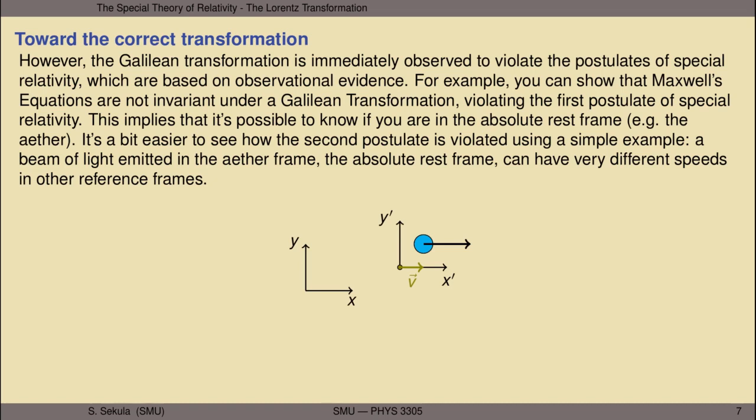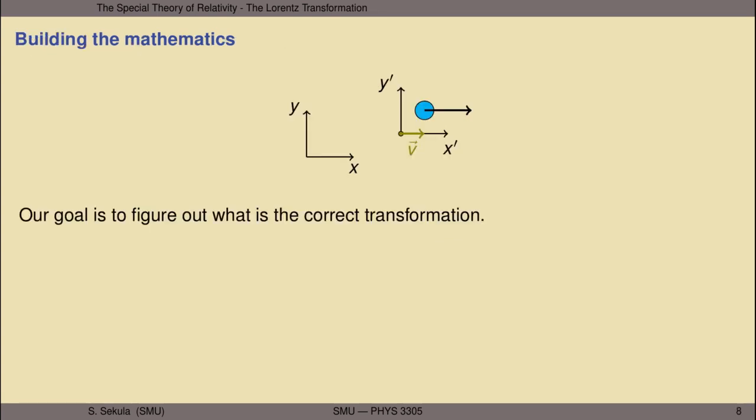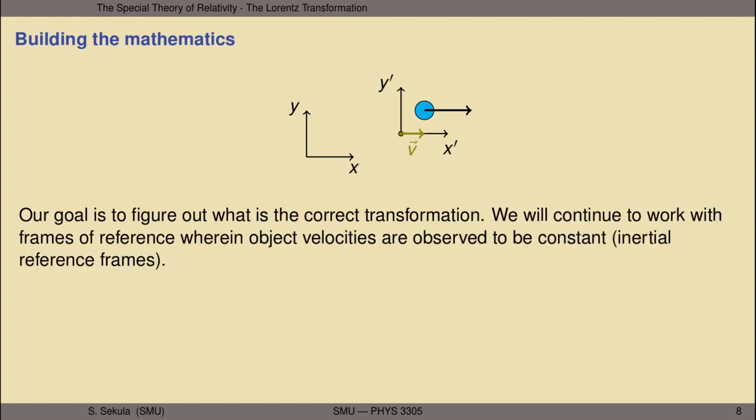We want to find a transformation of x and x prime, y and y prime, U and U prime, and t and t prime between these frames that is compatible with the postulates of special relativity. We don't have to change the picture of the two inertial reference frames; we just have to apply the postulates of special relativity in constructing the transformation from one frame to the other. We will continue to work with frames of reference wherein object velocities are observed to be constant—that is, inertial frames of reference. That puts the special in special relativity.